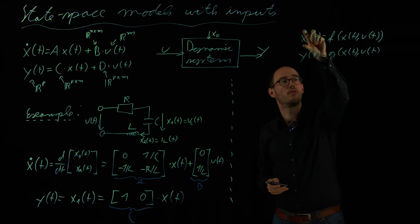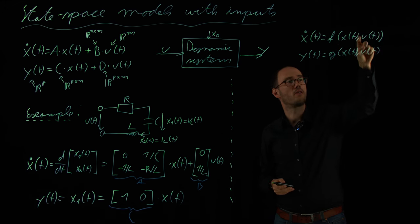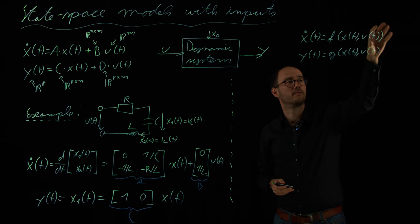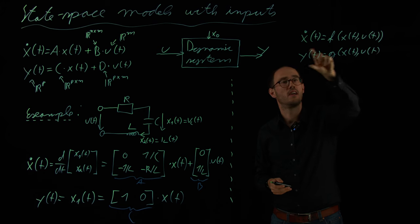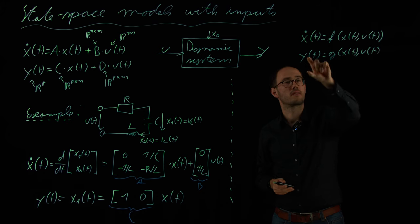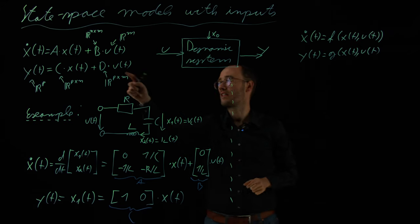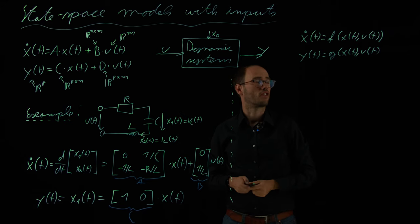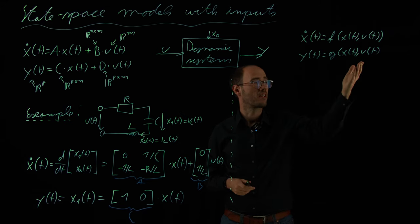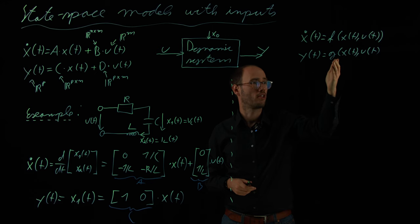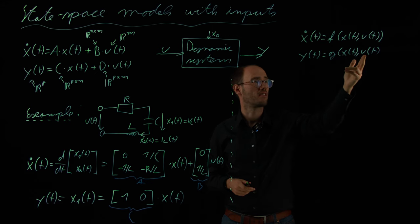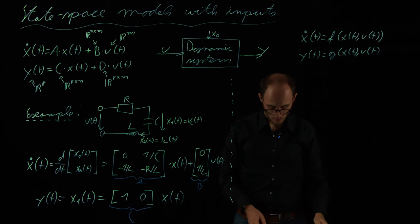And y of t is g of x of t and u of t. So, basically, a generalized version of this linear kind of input-output ODE here. We have still an ODE in a non-linear fashion where now a second quantity comes into the game, which is the input vector or the input, depending if it's a vector or a scalar, and the outputs, so the measurements, which are also like here in the linear case, are basically just a static equation mapping, potentially non-linearly, the x's and the u's towards the outputs.